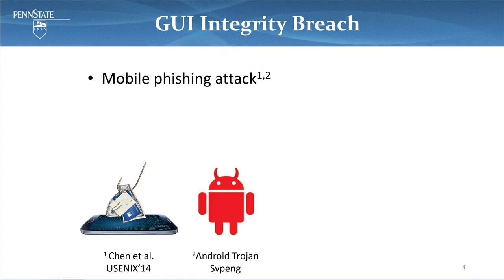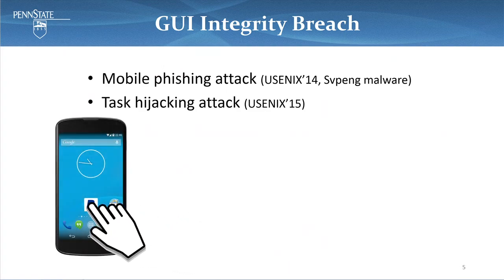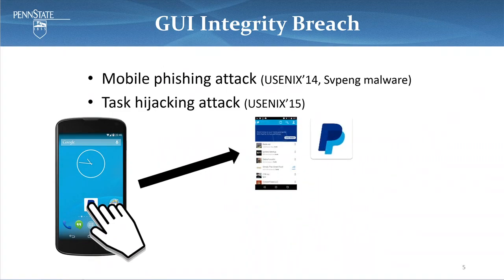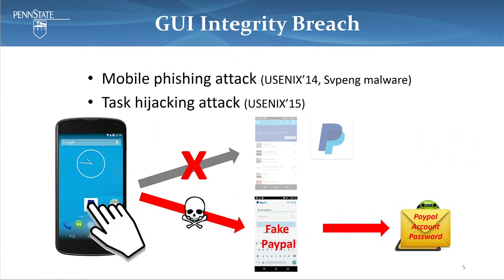To give you an example, in Cheng's work in USENIX 2014, the authors demonstrated how an attacker can successfully infer the user activity in the foreground and launch a phishing attack. This technique has been widely employed by real malware, for instance a malware trojan called SVPen. A similar attack can also be achieved by a very different attack vector called task hijacking. In this example, a user attempts to open the PayPal application from the launcher, but instead of the real PayPal, a fake PayPal UI shows up and the PayPal account password information is stolen.